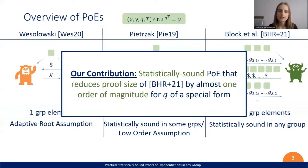Now our contribution is the following. We construct a statistically sound PoE that reduces the proof size of Block et al. by almost one order of magnitude for q of a special form. We will later see that in all of the applications we consider, choosing q of this form is not a restriction. And if you want to see how we achieve this result, please come to the live talk.